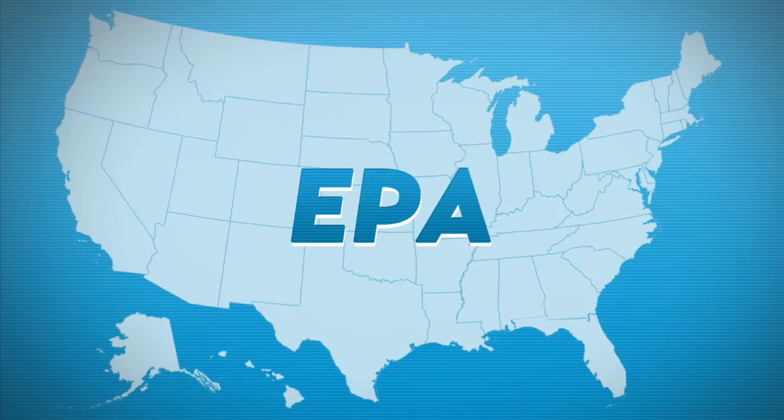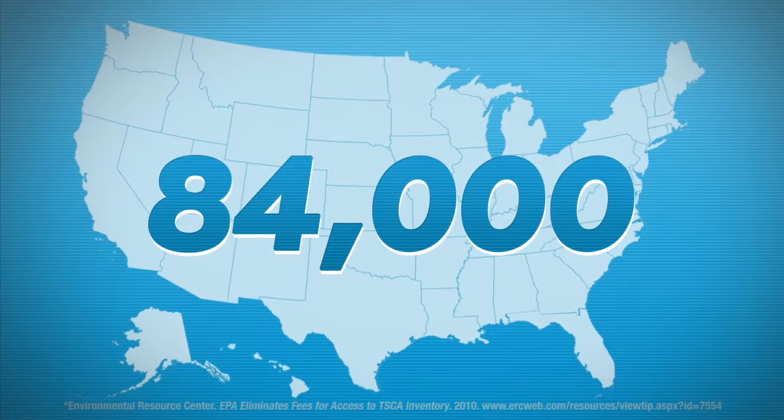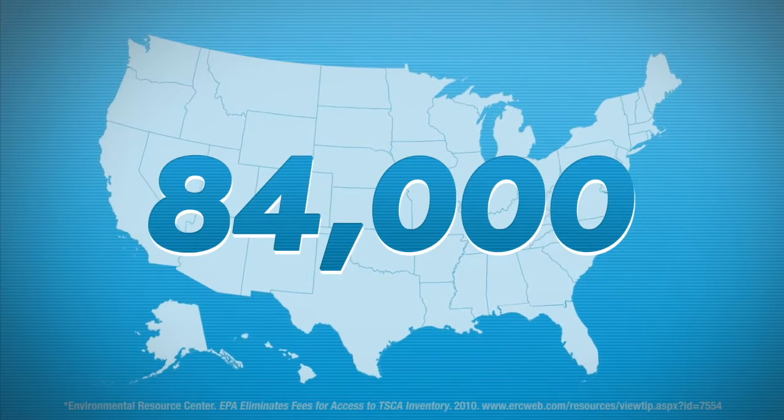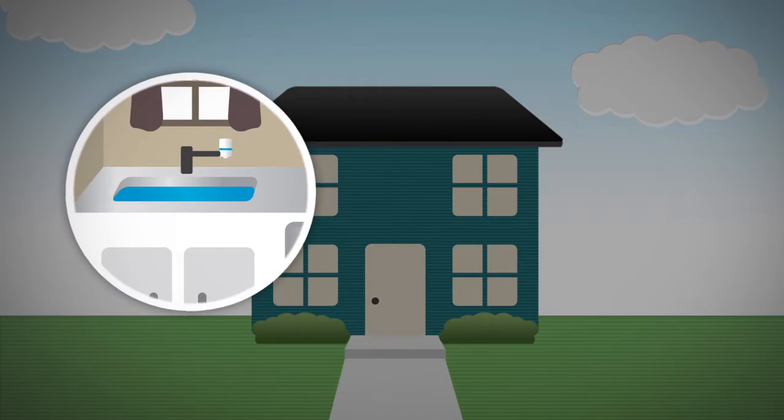According to an EPA report, there are more than 84,000 different chemicals present in the United States today, and an untold number of these might be in your water.